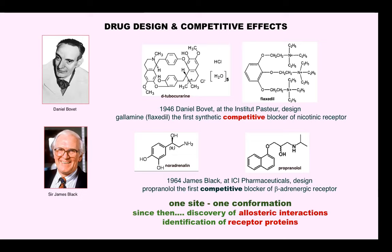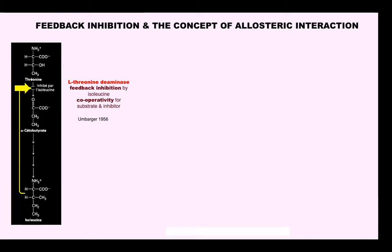Since that time, the main idea was one site, one conformation. Then there was the discovery of allosteric interaction. The concept of allosteric interaction, compared to competitive interaction, arose from the study of regulatory proteins in bacteria, like threonine deaminase, an enzyme at the beginning of the pathway for the biosynthesis of isoleucine. Umbarger, in 1956, discovered that the end product of the pathway selectively inhibited the first enzyme, not the others. This was an important finding.